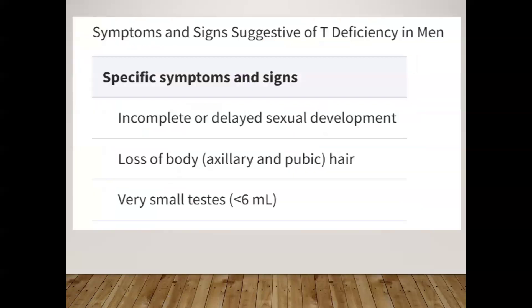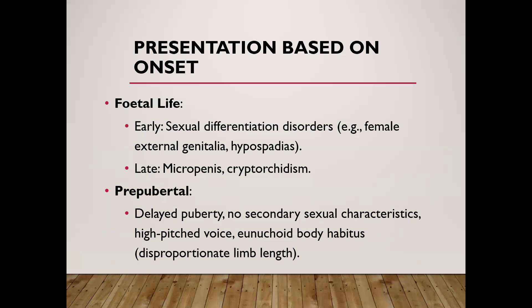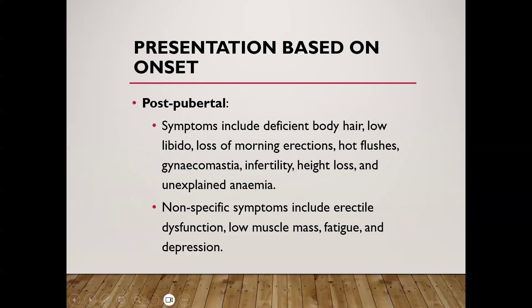Specific symptoms and signs of testosterone deficiency include incomplete or delayed sexual development, loss of axillary or pubic hair, and very small testes less than 6 ml on orchidometer. Depending on timing of onset: fetal onset causes sexual differentiation disorders such as female external genitalia, hypospadias, or micropenis and cryptorchidism; pre-pubertal onset causes delayed puberty, absent secondary sexual characteristics, high-pitched voice, and eunuchoid body habitus with disproportionate limb length.